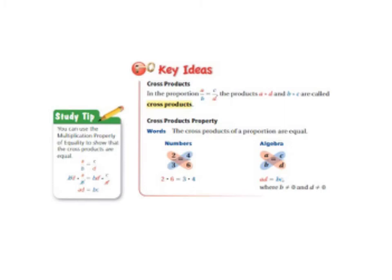This is what I was telling you was in your lesson later which is a quick and easy way to see if things are equivalent. So it says cross products in the proportion A over B equals C over D.